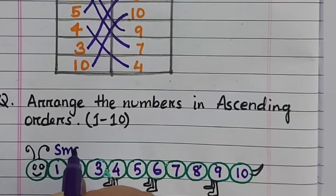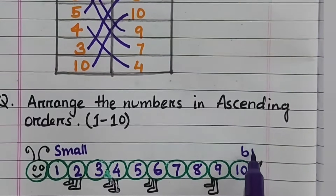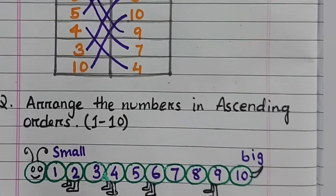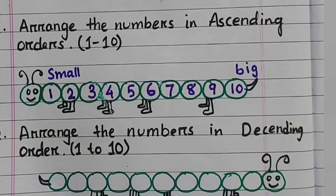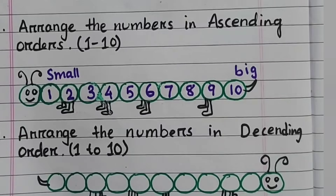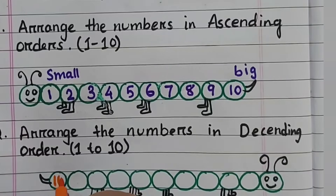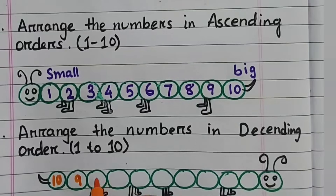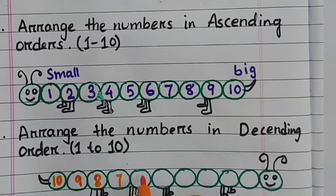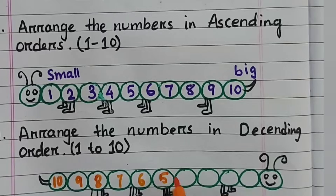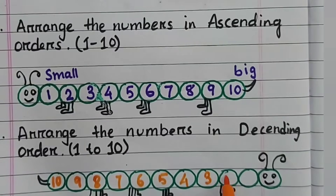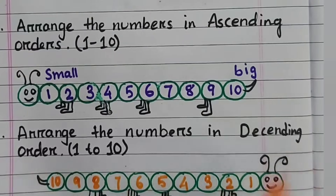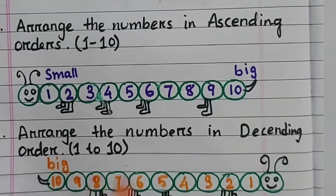Now arrange the numbers in descending order. Descending means big to small. The big number is ten, then nine, eight, seven, six, five, four, three, two, one — descending means big to small.